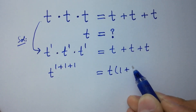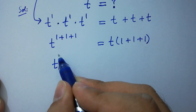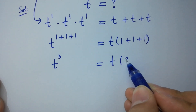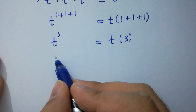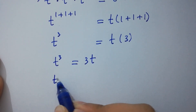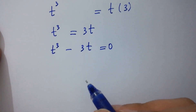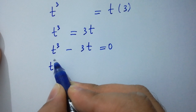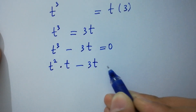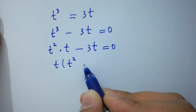We have 1 plus 1 plus 1, so t to the power 3 equals 3t. This gives us t cubed equals 3t, which can be written as t cubed minus 3t equals 0.